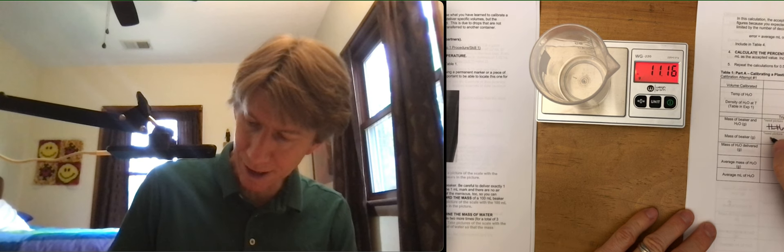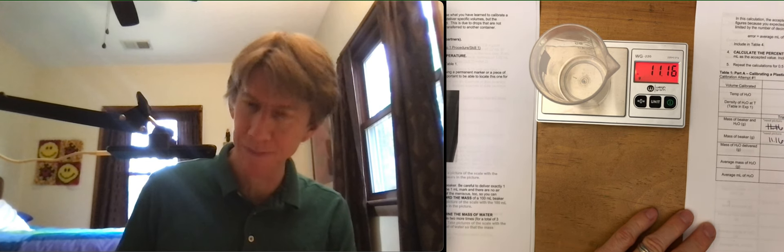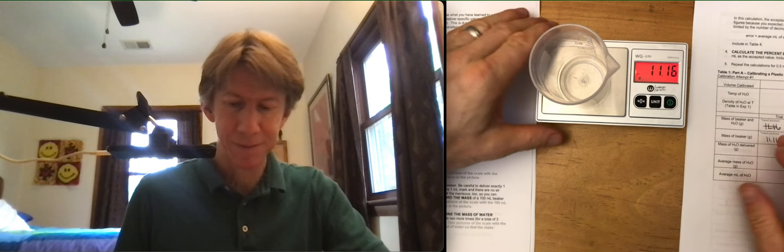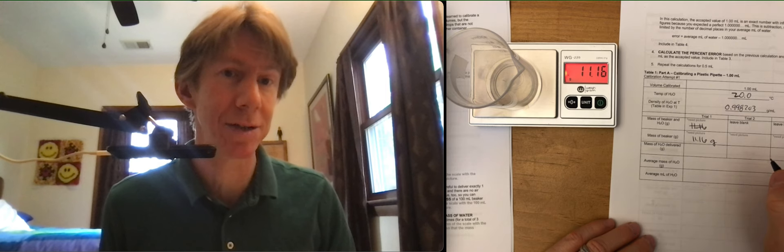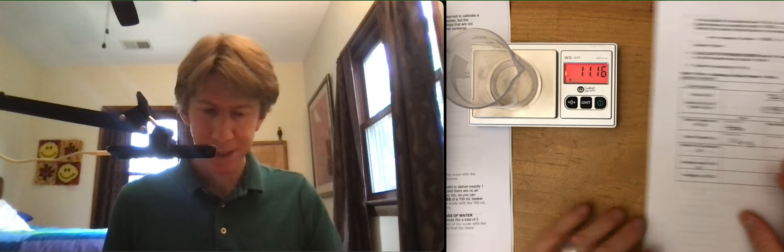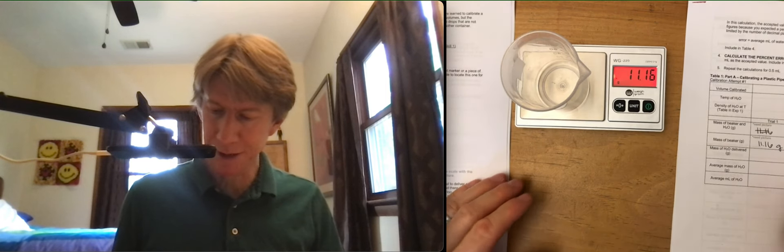Looks like 11.16. I've got my mass of beaker down here this time, which means that I need to move these around, because my mass of beaker in H2O should be up here. This is what I need the picture of, so I'll change that for your version of this. All right, 11.16 grams.